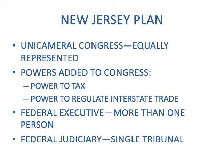The New Jersey Plan was a little different — it favored the smaller states. They only wanted a unicameral, or one-house, Congress where everyone had the same number of representatives. They added certain powers like the power to tax, and they wanted to regulate trade coming in and out of the country. In their executive branch, they wanted more than one person so there wouldn't be a tyrant. The judicial branch would be a single tribunal body.